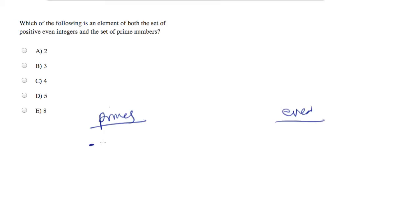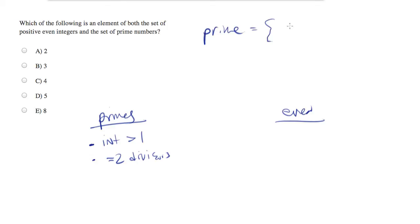Primes are any integer greater than one which has exactly two divisors. For example, I'll write out a list of primes: 2, 3, 5, 7, 11, 13, 17 — and this goes on. The list of primes is infinite. Pragmatically speaking, you pretty much simply need to have the list of primes memorized up through, say, 30. As a fallback, you can remember this definition.